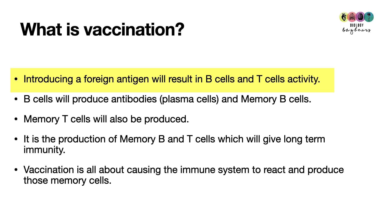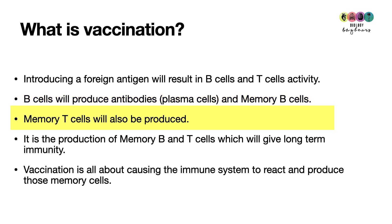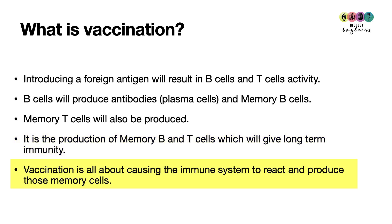You're going to stimulate B cells and T cells to become active in that baby. The B cells will produce plasma cells that produce the antibodies, and they'll also produce specific memory B cells with the long-term memory of how to fight that particular virus. The baby will also produce memory T cells — particularly the helper T memory cells — and it's the production of those memory B and memory T cells which will give the baby long-term immunity.